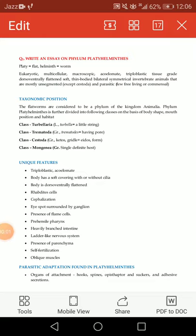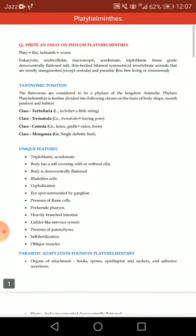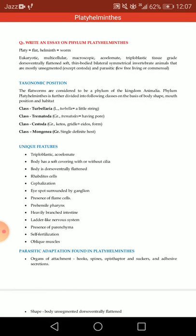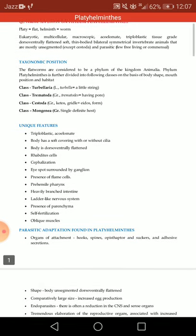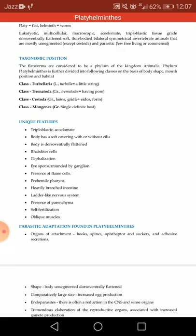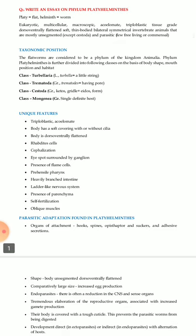Assalamu alaikum beautiful people. If the examiner asks you to write an essay on phylum Platyhelminthes, then how to write it. 'Platy' means flat and 'helminth' means worms. They are eukaryotic, multicellular, macroscopic, acoelomate — acoelomate means there is no coelom in them — triploblastic, tissue grade, dorsal-ventrally flattened, soft, thin-bodied, bilaterally symmetrical.